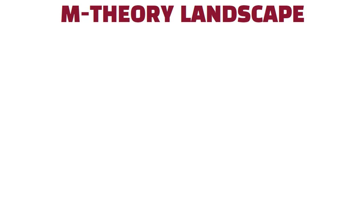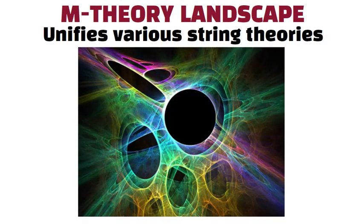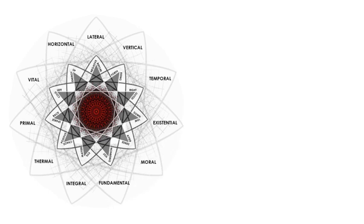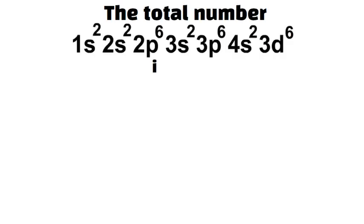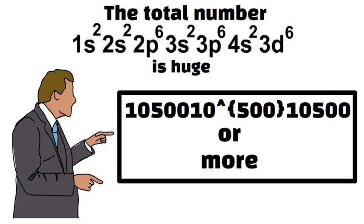M-Theory Landscape. M-Theory unifies various string theories, suggesting up to 11 dimensions exist. In these models, the extra dimensions can be curled up or compactified in countless ways. Each distinct shape leads to different values for fundamental constants and particle types. The total number of possible configurations is huge. Some say around 10 to the 500 power or more. This enormous set of solutions is often called the String Landscape.